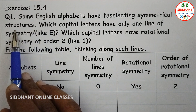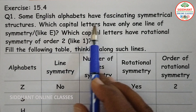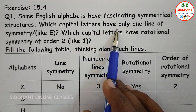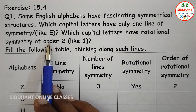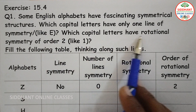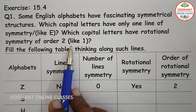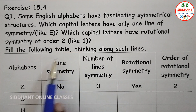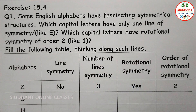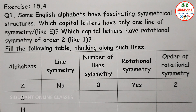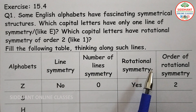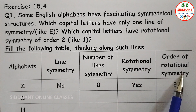Exercise 15.4, Question number 1. Some English alphabets have fascinating symmetrical structures. Which capital letters have only one line of symmetry, like the letter E? Which capital letters have rotational symmetry of order 2, like I? Fill the following table thinking along such lines. The table has columns for: alphabets, line of symmetry, number of lines of symmetry, rotational symmetry, and order of rotational symmetry.